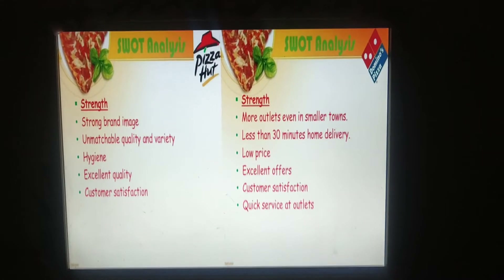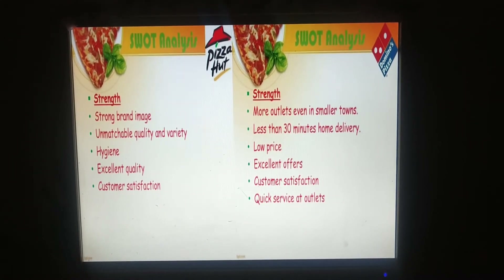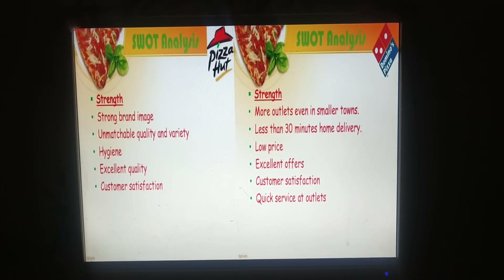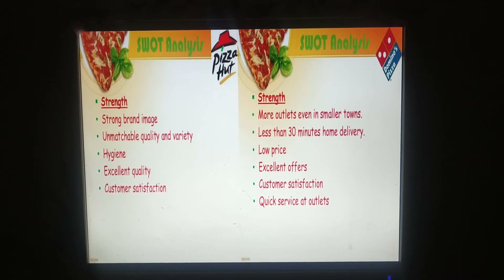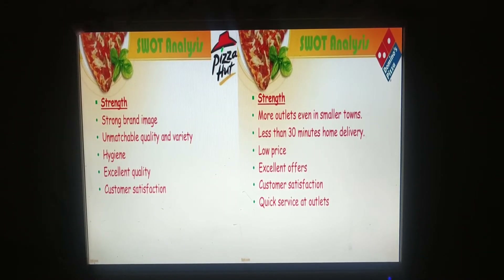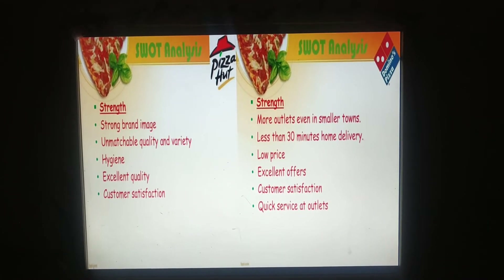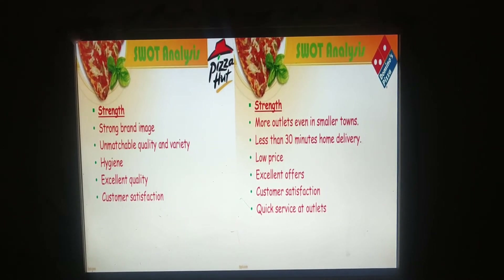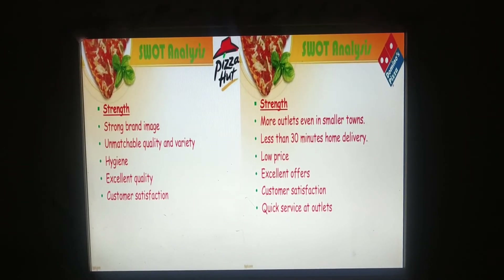The SWOT analysis of Pizza Hut and Domino's Pizza begins with strengths. Pizza Hut's strengths include strong brand image, unmatchable quality and variety, hygiene, excellent quality, and customer satisfaction. Domino's Pizza's strengths include more outlets even in smaller towns, less than 30-minute home delivery, low prices, excellent offers, customer satisfaction, and quick service at outlets.